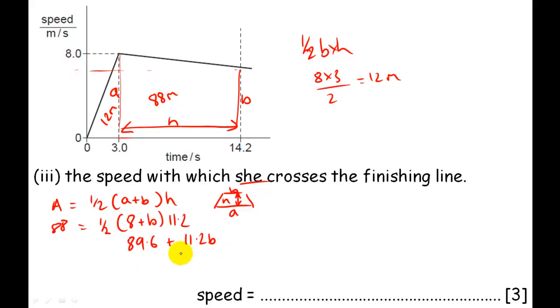So divide by two now. It's going to get me to eighty-eight is equal to eighty-nine point six divided by two gets me forty-four point eight plus eleven point six divided by two, which is five point six, five point six b. So subtract forty-four point eight from both sides, gets me forty-three point two is equal to five point six b. Divide both sides by five point six.